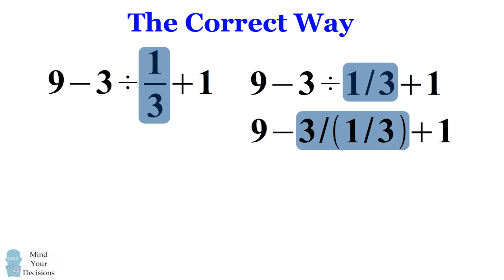3 divided by one-third is equal to 9 and now we have 9 minus 9 plus 1 which gives us the correct answer of 1.